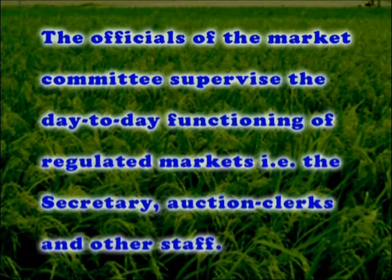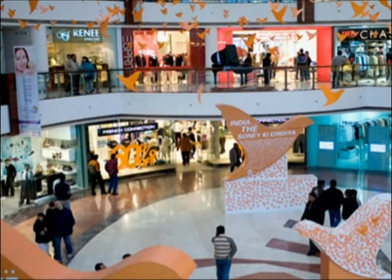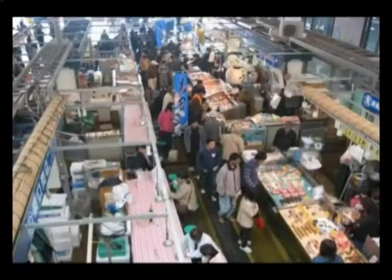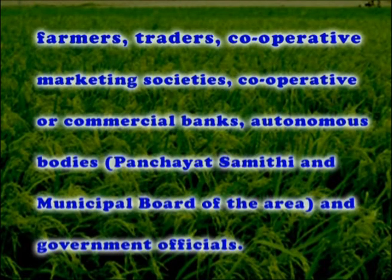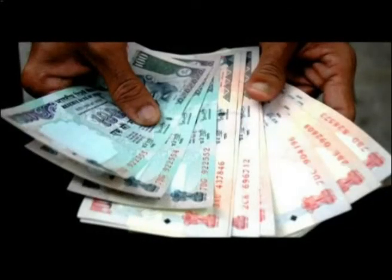The officials of the market committee supervise the day-to-day functioning of regulated markets — that is, the secretary, auction clerk, and other staff. Administrative decisions are taken by the nominated or elected market committee, which consists of representatives of all sections: farmers, traders, cooperative marketing societies, cooperative or commercial banks, autonomous bodies like panchayat samiti, municipal boards of the area, and government officials. The number of farmer members is more than that of other interest groups. Sources of funds for the market committee include market fee, license fee or renewal fee, and subsidy from the government.